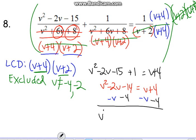Nothing to combine with the v squared. Negative 2v minus v gives me negative 3v. Negative 14 minus 4 gives me negative 18. And then I have 0 on the right side.